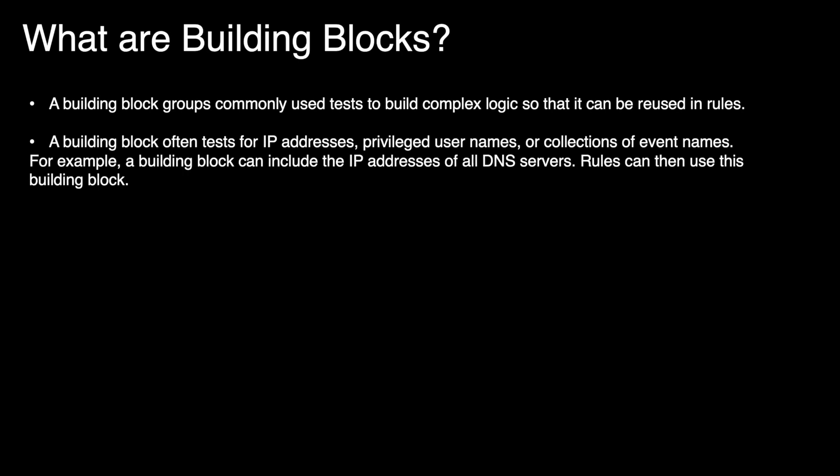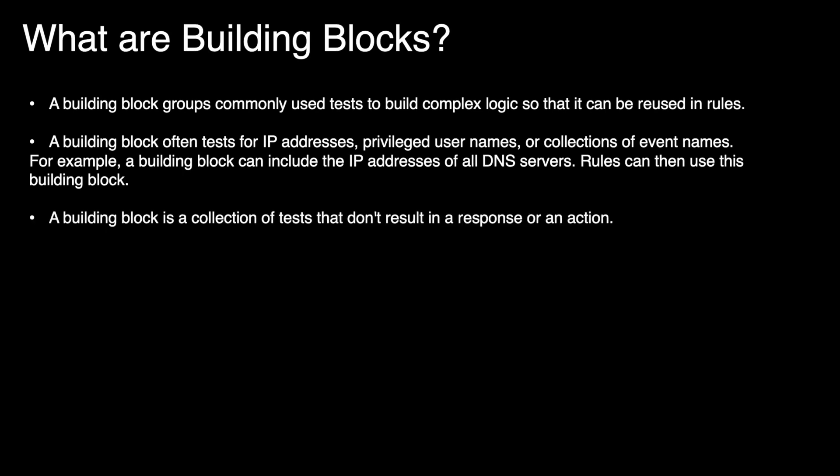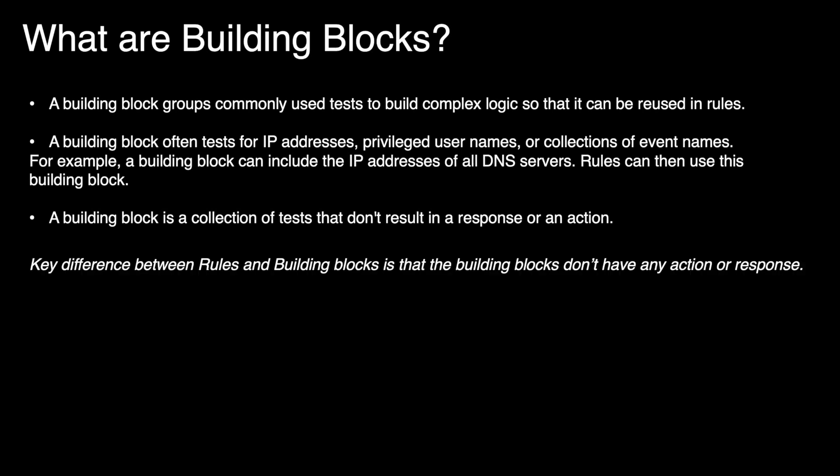Let's take an example. A building block can include the IP addresses of DNS servers in the environment, and rules can then use this building block if they want to test for traffic or events coming from the DNS servers. A building block is a collection of tests that don't result in a response or an action, and that is the key difference between a rule and a building block. We know that a rule can generate an offense or you can set various responses like email or SNMP to be executed at rule match. This is not true for building blocks — they are just a bundle of tests that can be used in the rules.